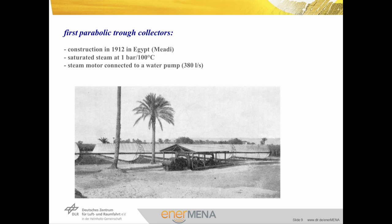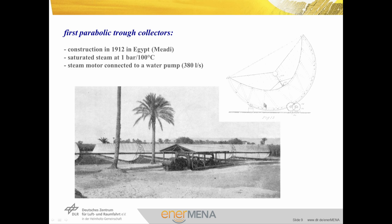The idea of parabolic trough collectors is not new. Actually 100 years ago in Egypt the first commercial parabolic collector plant was constructed by the American engineer Schumann. The parabolic trough collectors evaporated water to saturated steam at one bar and 100 degrees. The collectors were connected to a steam motor that produced mechanical power for a water pump with a capacity of 380 liters per second. In the center we have the absorber tube, glass mirrors, and a structure to give stability to the mirror surface.